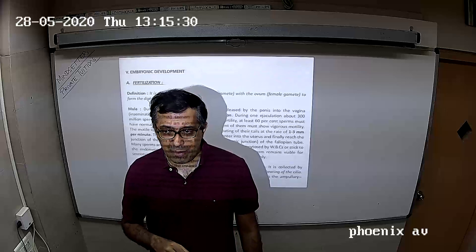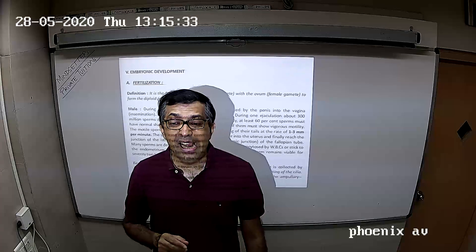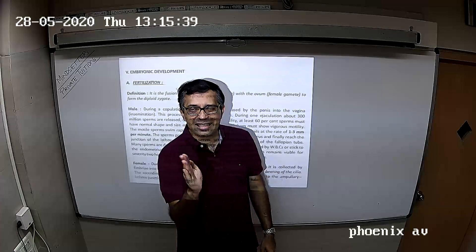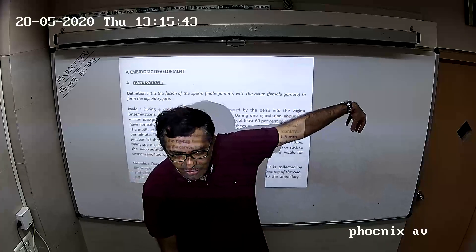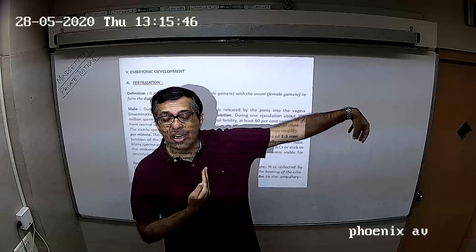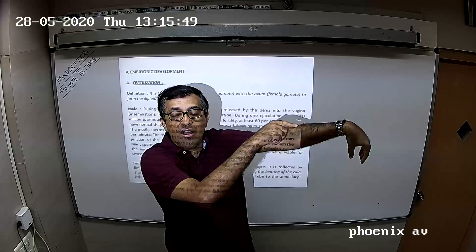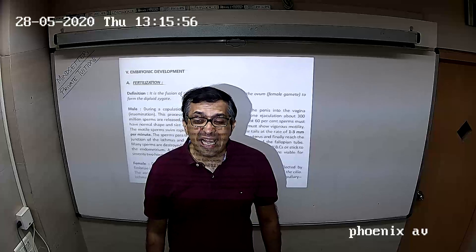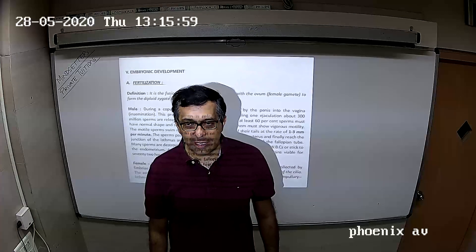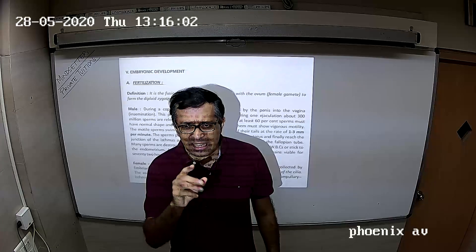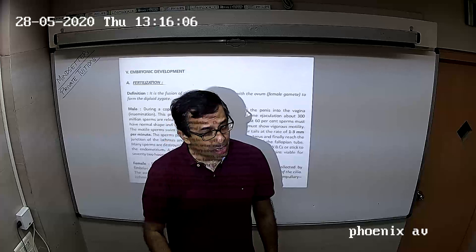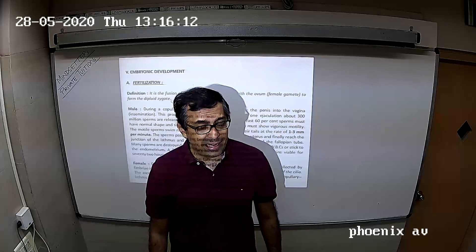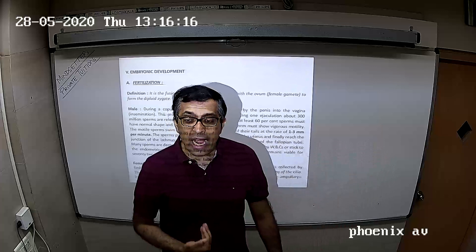3 to 5 ml of semen containing 300 million sperms are released during ejaculation. These sperms, by the zigzag beating of their tail, start moving from the vagina into the uterus and into the fallopian tube where they fuse with the egg. The sperms move at a speed of 1 to 3 mm per minute — remember, a sperm is only 50 microns, so they are covering 3 mm per minute at tremendous speed.